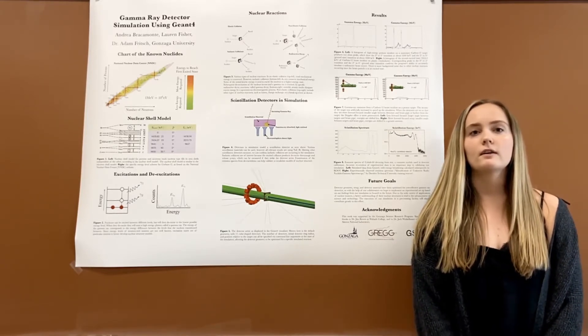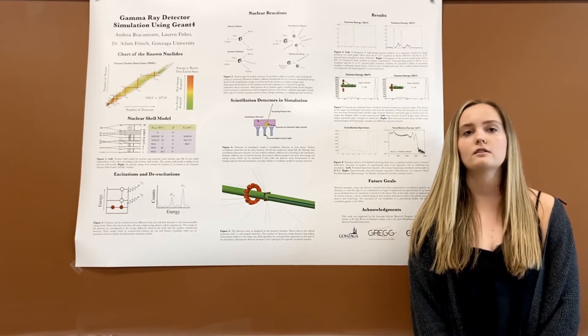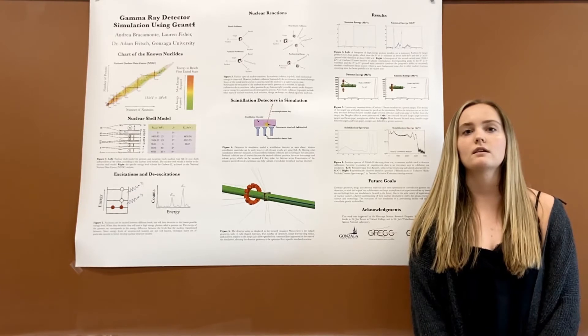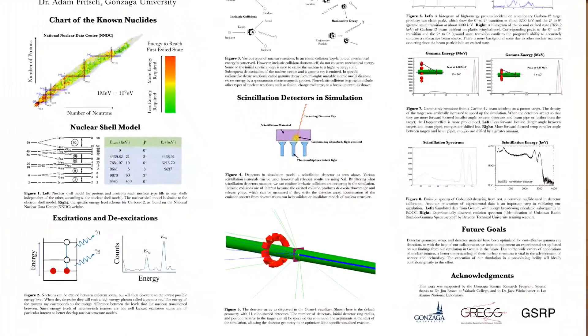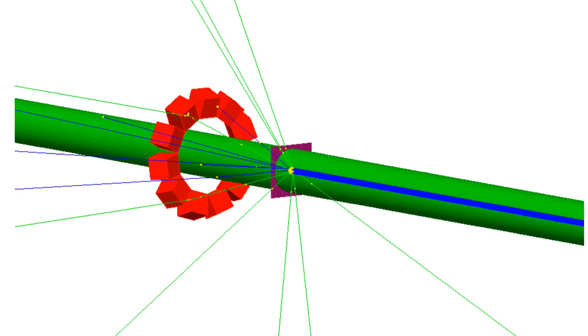One of the many benefits of a computational simulation is the ability to run many different detector and target geometries and see which setup produced the greatest yield in gamma ray data. As seen in figure five, to increase the efficiency of our simulation, we also found it necessary to write code specifically to optimize the detector's geometry for gamma ray detection.